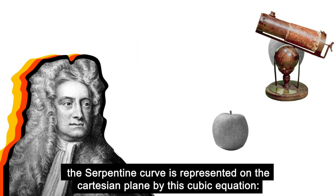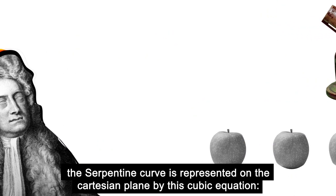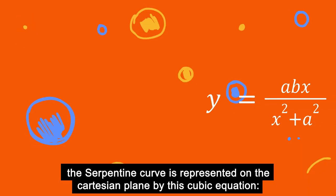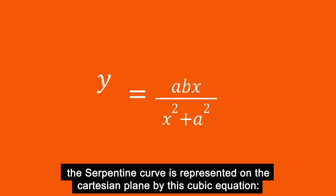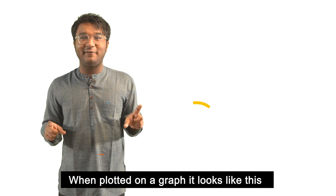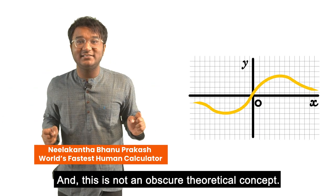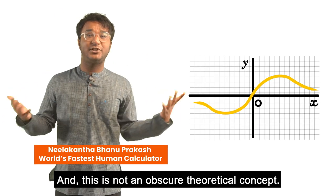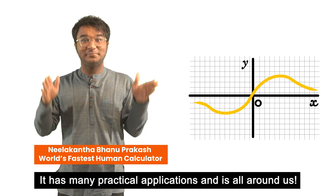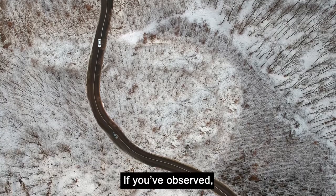Named and classified by Sir Isaac Newton, the serpentine curve is represented on a Cartesian plane by this cubic equation: y is equal to abx divided by x squared plus a squared. When plotted on a graph it looks like this, and this is not an obscure theoretical concept — it has many practical applications and is all around us.